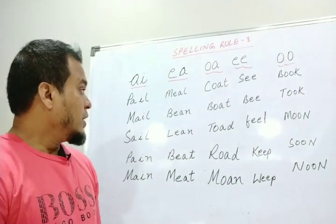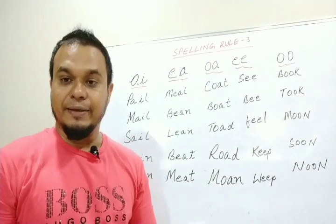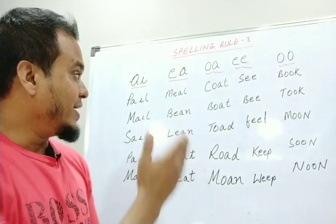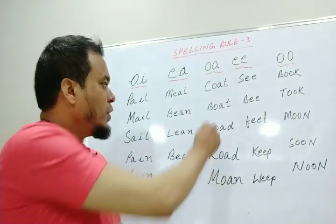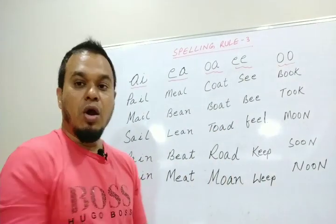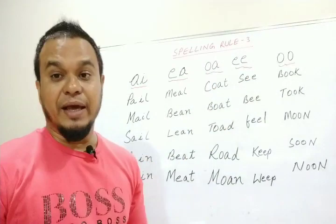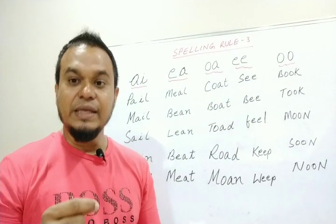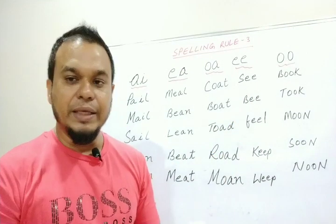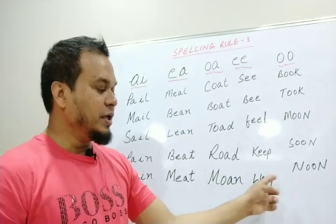That was the rule for E and A. Now, when double E comes together, the sound is also the long E sound. For example: S, E, E — SEE. B, E, E — BEE. F, E, E, L — FEEL. K, E, E, P — KEEP. W, E, E, P — WEEP.